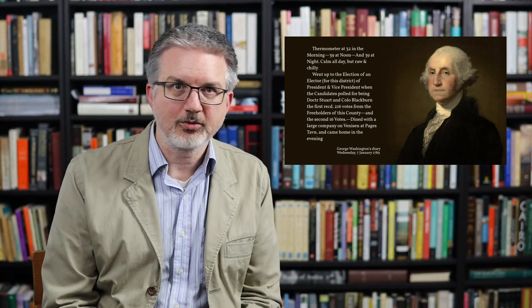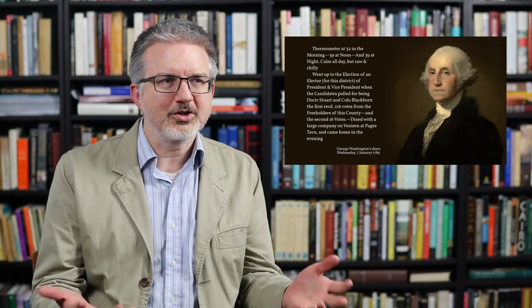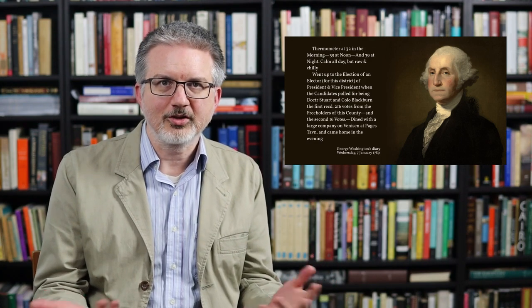I'm currently working on a much bigger video on the election of 1789, and in the course of researching that video, I came across this diary entry from Washington, which I thought was a great little glimpse into the way the election was run in Virginia that year. It's a great illustration of the fact that people in 1789 took the Electoral College seriously and treated it as an actual functioning part of the American political system. But I couldn't find a way to organically fit that into that video, so I decided to make a separate video about it.